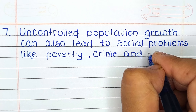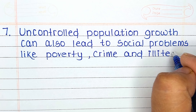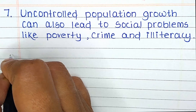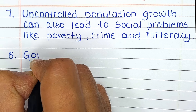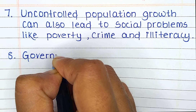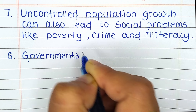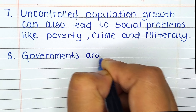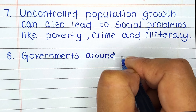Seventh line: Uncontrolled population growth can also lead to social problems like poverty, crime, and illiteracy.